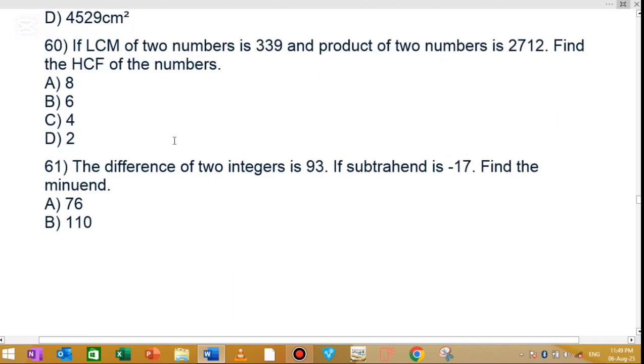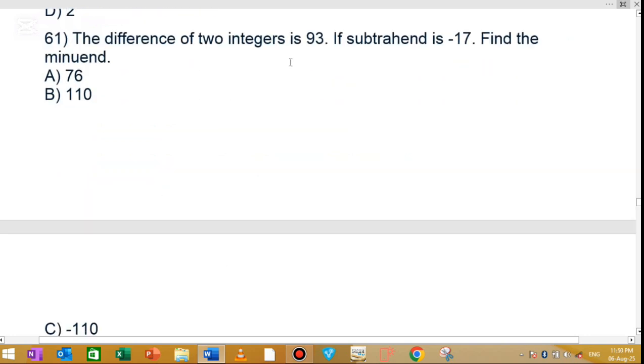MCQ number 60: If LCM of two numbers is 339 and the product of two numbers is 211, find the HCF of the numbers. Option A, which is 8, is the correct answer. MCQ number 61: The difference of two integers is 93. If the subtrahend is 17, find the minuend. The correct option is minus 110.